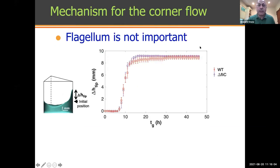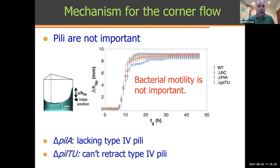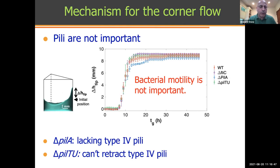The first thing you might ask is, is swimming important? You do the same experiment — position versus time — with a mutant that lacks the flagellum, and the experiment is essentially identical. So swimming isn't important to this effect. You can do the same experiment removing pili — the type four pili — and whether you don't have the pili or you inactivate their ability to pull or track, you get effectively the same curve. These last two results rule out all forms of bacterial motility as being important to this.